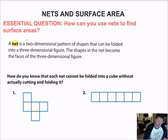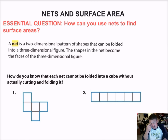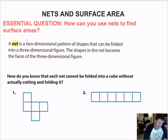So the first thing I want to look at here: how do you know that a net cannot be folded into a cube without actually cutting it and folding it? Without taking this shape and cutting it out, how do we know for sure that when I fold it up, it won't make a cube? The first thing I always tell you: how many sides does a cube have? A cube has six sides. So the first thing I want to do is count how many sides this net has — one, two, three, four, five. Well, that can't make a cube simply because it doesn't have enough sides.